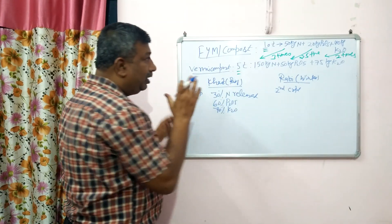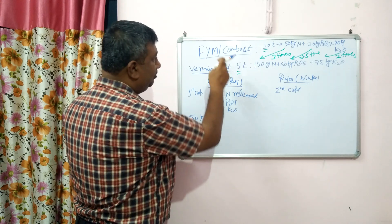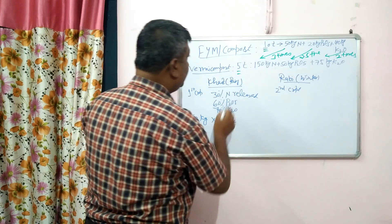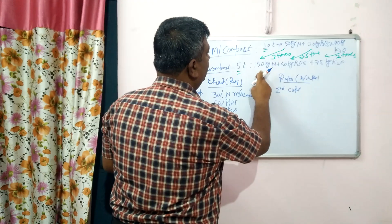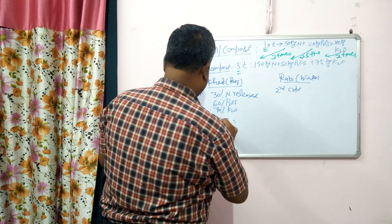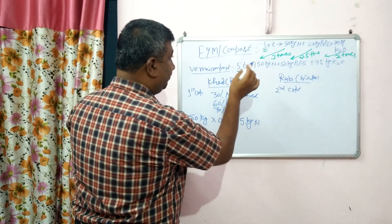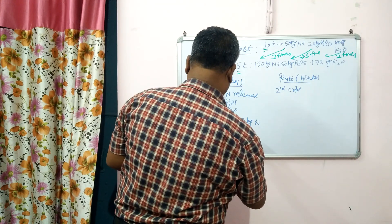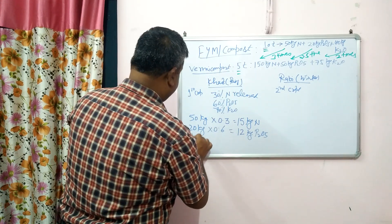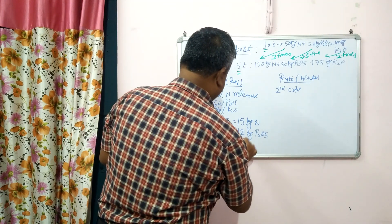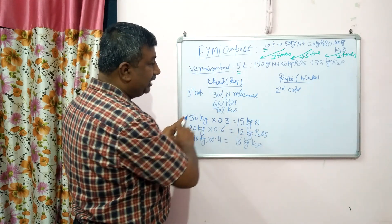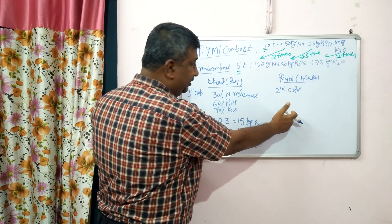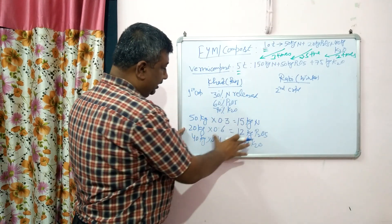So the total nitrogen from 10 tonnes of FYM is 50 kg. Only 30% is released, which equals 15 kg nitrogen. Phosphorus is 20 kg, so 60% released equals 12 kg phosphorus. Potassium is 40 kg, so 70% released equals approximately 16 kg potassium. This is the nutrient released in the first year. The remaining amount is released in the Rabi winter season. So the whole nutrients are not available in the first season crop — the rest is available in the winter season crop.